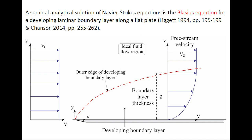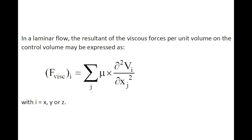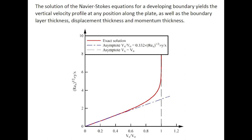A semi-analytical solution of the Navier-Stokes equation is the Blasius equation for a developing laminar boundary layer along a flat plate. In a laminar flow, the resultant of the viscous force per unit volume in the control volume may be expressed as shown here, where mu is the dynamic viscosity of the fluid. The solution yields a vertical velocity profile at any position along the plate, as well as a boundary layer thickness, displacement thickness, and momentum thickness, with the graph showing in dimensionless form the vertical velocity profile above the plate.